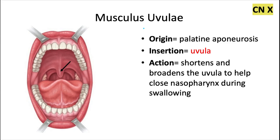Next we have the musculus uvulae. This one originates also from the palatine aponeurosis and inserts into the uvula. The action is to shorten and broaden the uvula during swallowing to help close the nasopharynx. This one is also innervated by cranial nerve 10.